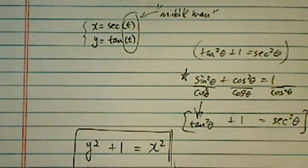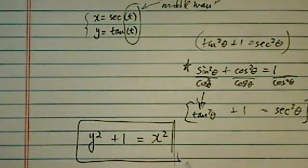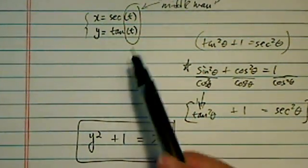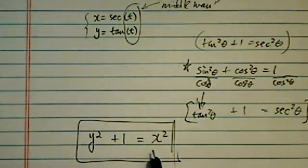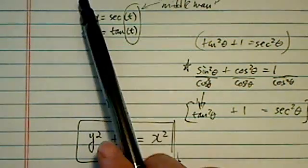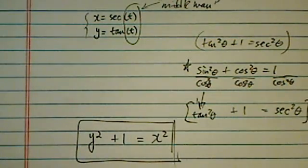So, here we eliminated the middle variable or parametric variable t. So, we eliminated the middleman.